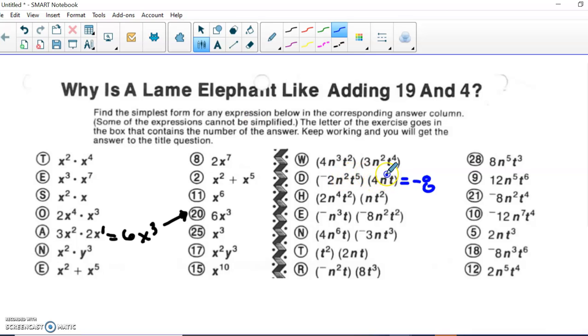n to the second times n. Remember that's to the first. That's going to give us n to the third. And then t to the fifth times t again to the first is going to give us t to the sixth. And we're going to try to find that one that looks like 18. So where you see d, you're going to match it up with 18.